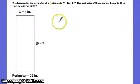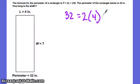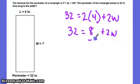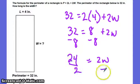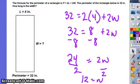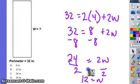The formula for the perimeter of a rectangle is P equals 2 times the length plus 2 times the width. The perimeter of the rectangle below is 32 inches. So if 32 inches is the perimeter, and it's equal to 2 times the length, which on this rectangle is 4, plus 2 times the width. What is the width? So we've got 8 here, subtract 8, subtract 8, 24 is equal to 2W, divide both sides by 2, and 12 is equal to W. And the answer choice for that one is B.